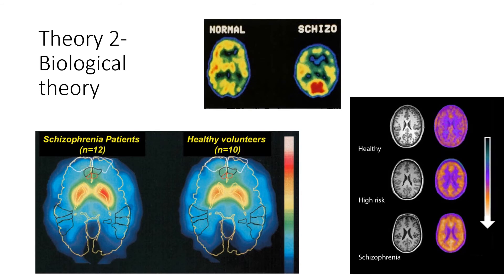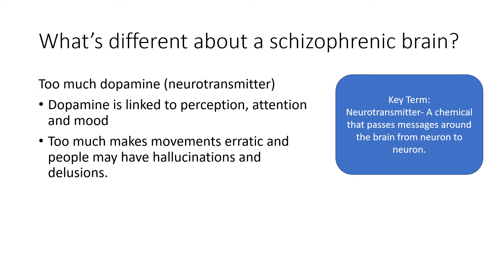Our second theory is a biological theory. There are quite a few bits of neuropsychology that come up in the OCR course, so you need to think about how brain function might be different and how that might explain schizophrenia. From brain scans — we've got some on the screen — we can see that the brains of people with schizophrenia appear to work slightly differently. This might be due to different thought processes or different chemicals in certain areas, meaning some areas aren't as effective as they should be, which can explain some of the symptoms.